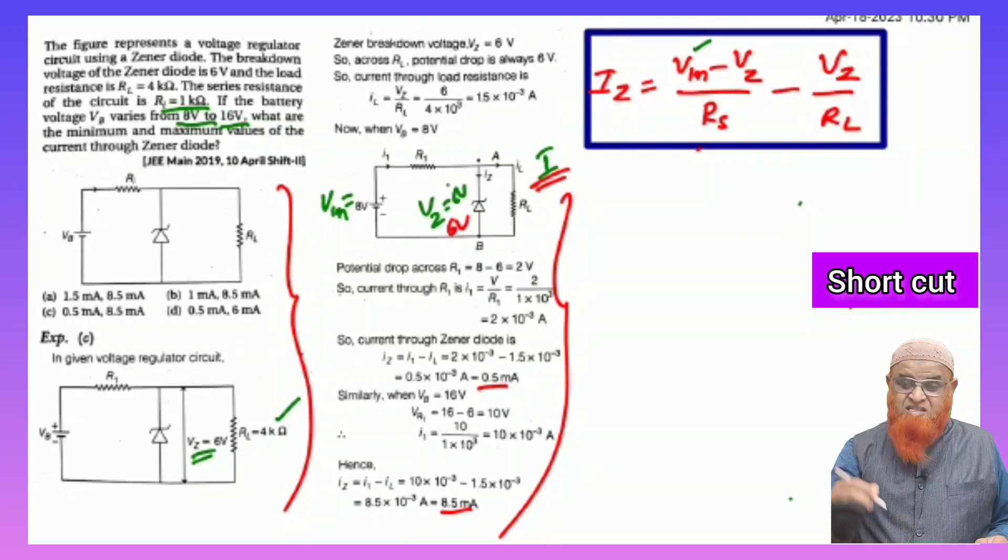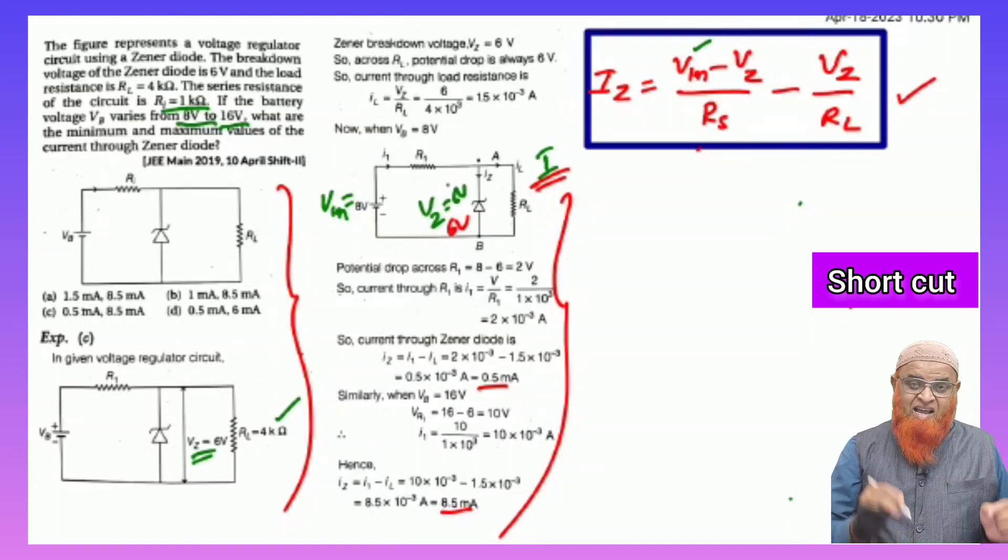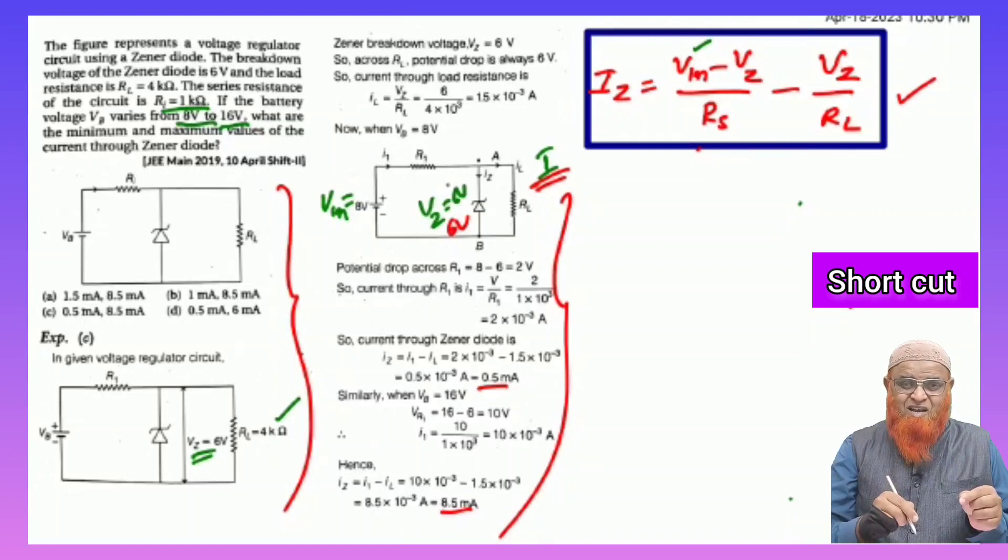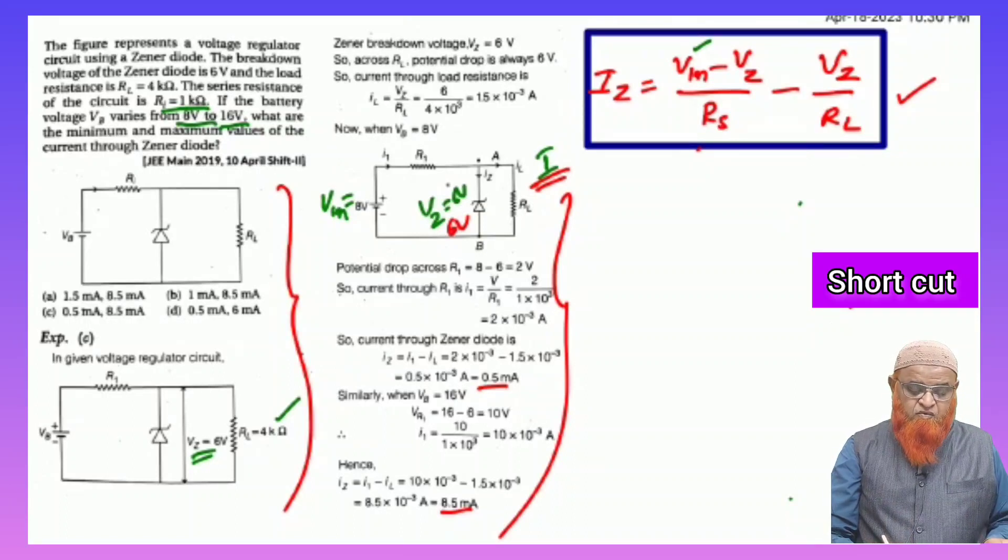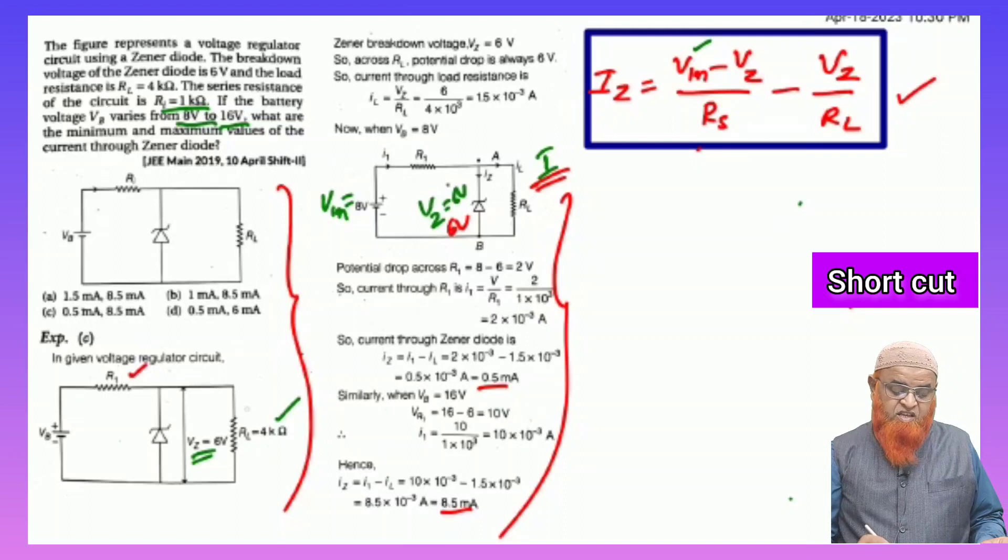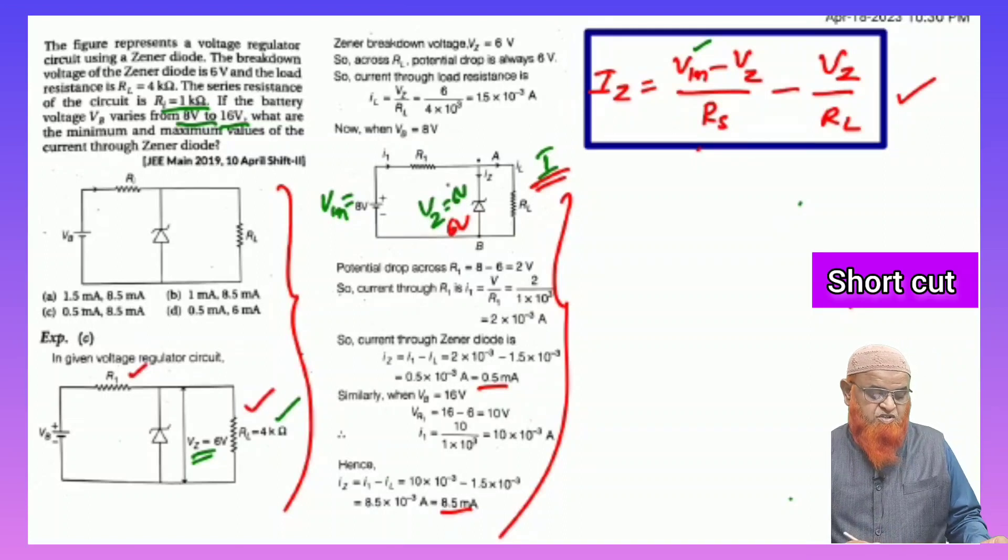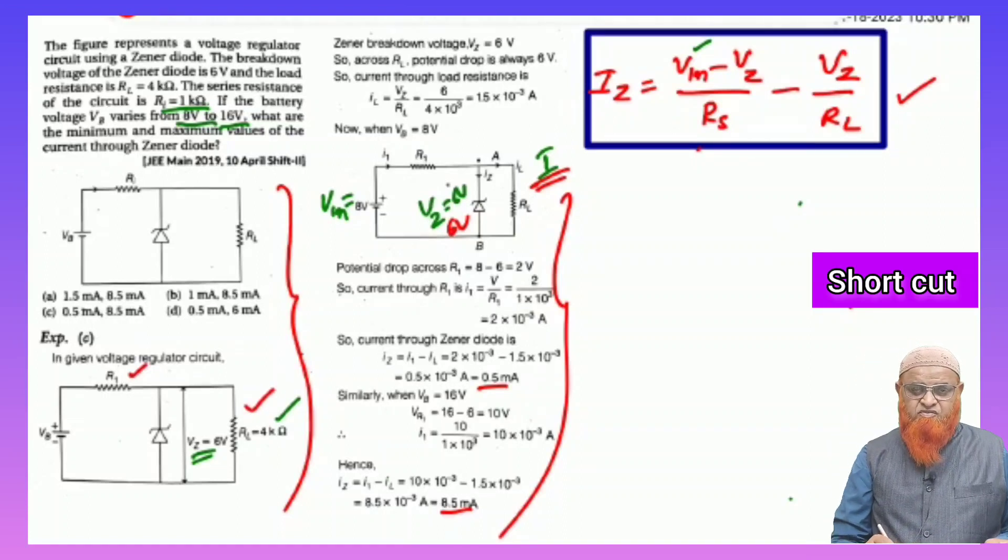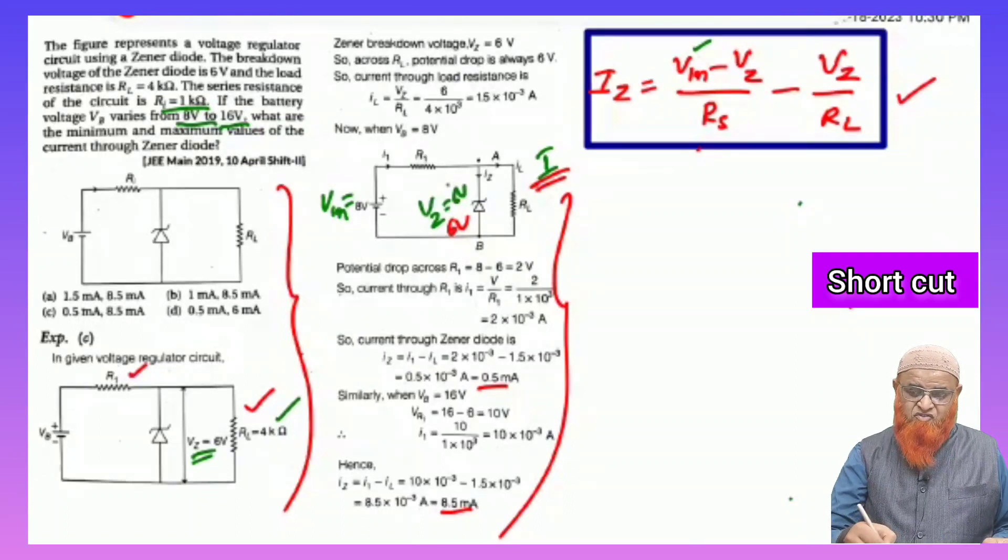So, Alhamdulillah, I am discovering one shortcut formula. This is going to be a shortcut formula: IZ, if you want to find out current across Zener diode, equals Vin minus VZ (input voltage minus Zener voltage) by series resistance which is given, minus VZ by RL (load resistance which is given). Directly you can substitute the values in this shortcut formula and get the answer.